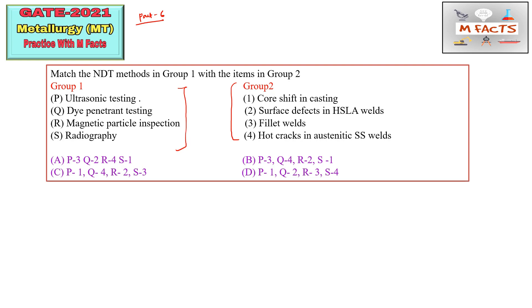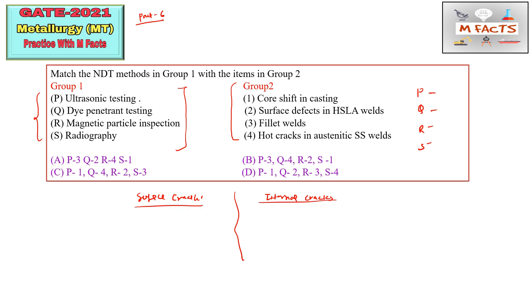First of all, write PQRS in every matching type question and try to find the odd one or unique one from Group 1 or Group 2. Here a few NDT techniques are mentioned. You should remember which categories are used for surface cracks and which are used for internal cracks. This is very important — when you know the surface techniques and the internal techniques, you can eliminate the options.